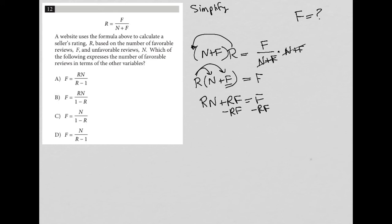Because I can subtract RF from both sides, which allows me to have F only on one side of the equation. So F minus RF. And that allows me to factor out an F on the right-hand side, so I'd have F times one minus R as the factored form of F minus RF. So I still have RN equals that.